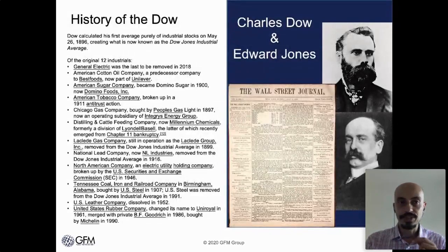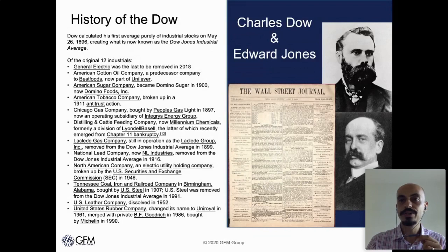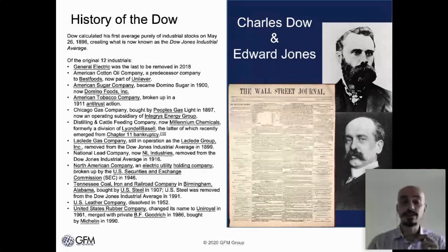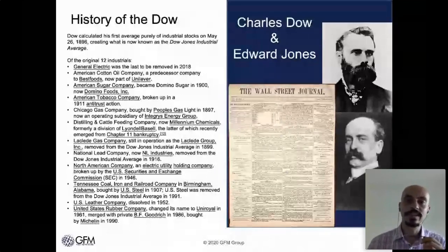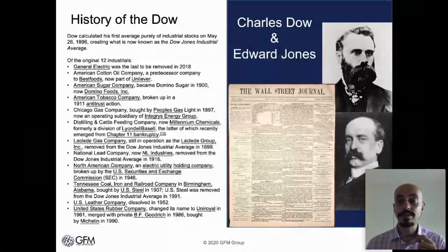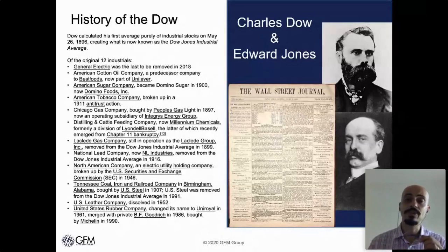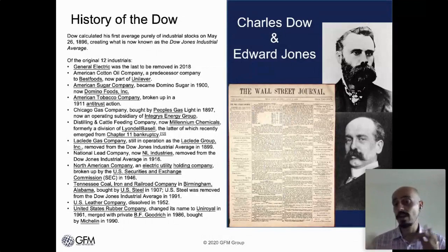A brief history of the Dow Jones Industrial Average: it was started back in 1896, over 120 years ago, by two partners — Charles Dow and Edward Jones. These were not fund managers, and they were not set out to establish a benchmark for the fund management industry. Rather, they were journalists who had started a newspaper called the Wall Street Journal. The reason they created this average was that they wanted a more concise way to say, on average, have stock prices gone up or down?